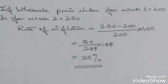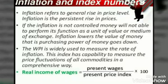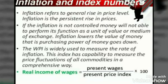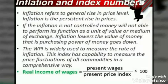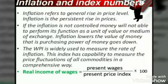Inflation and index numbers are related because inflation is always measured in terms of wholesale price index. For example, if the wholesale price index rises from 100 in 2010 to 150 in 2019, with our base year being 2010, and if this increase in prices persists continuously — say every year the price level rises by 5 to 10% — then we say it is a situation of inflation, because prices are continuously rising.